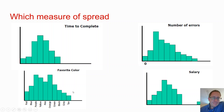How about this? Looks about normally distributed. Oh wait — it's colors. It makes no sense to do any kind of measure of spread. I can do the mode to figure out the most common color — orange or purple. They seem to be the same, but that's about it. There's no spread at all.